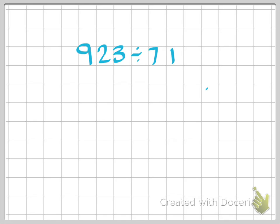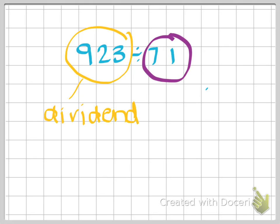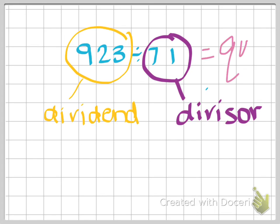So right now we have 923 divided by 71. I want to just label some things here, so write this down. This first number is called our dividend, and this second number is called our divisor. And I hope that you know by now that the answer to it is our quotient. All right, so that's just the basics.